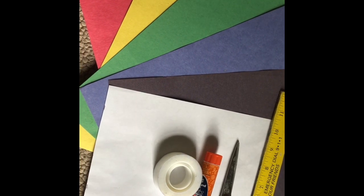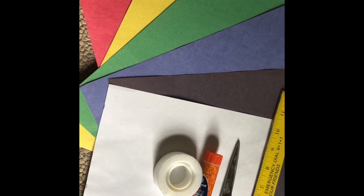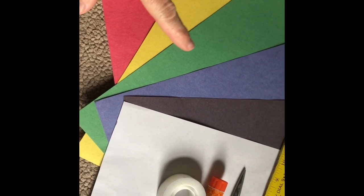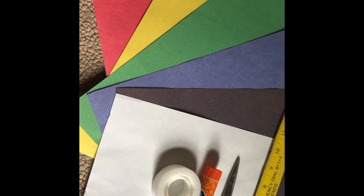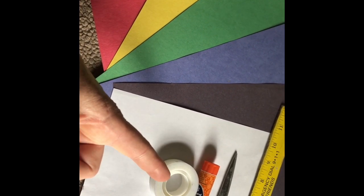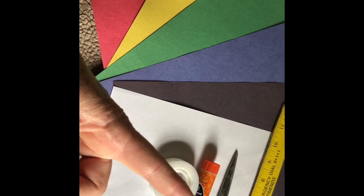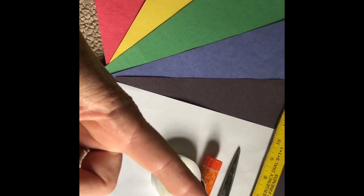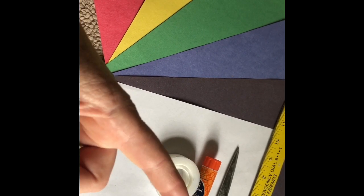These are the supplies we need to make our farm craft. We're going to need red, yellow, green, blue and black construction paper, a piece of white copy paper, a circle to trace, a glue stick, a ruler, a pencil or a pen, and scissors.